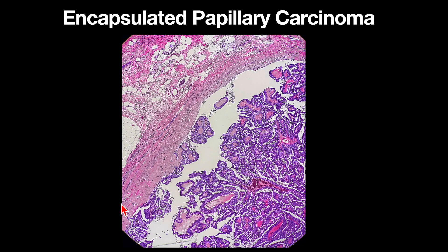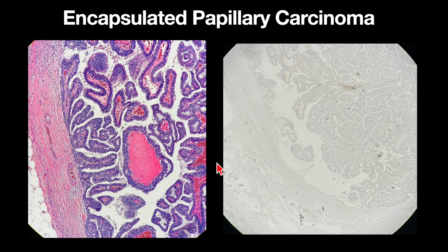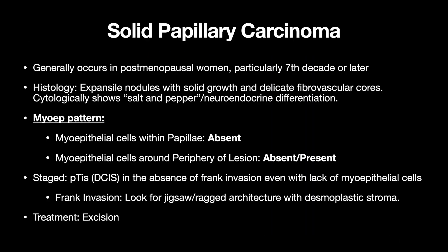Here you can see the fibrous capsule and the delicate fibrovascular stalks lined by the neoplastic epithelium. With the myoepithelial marker, it's absent within the papillae and absent around the periphery of the lesion.